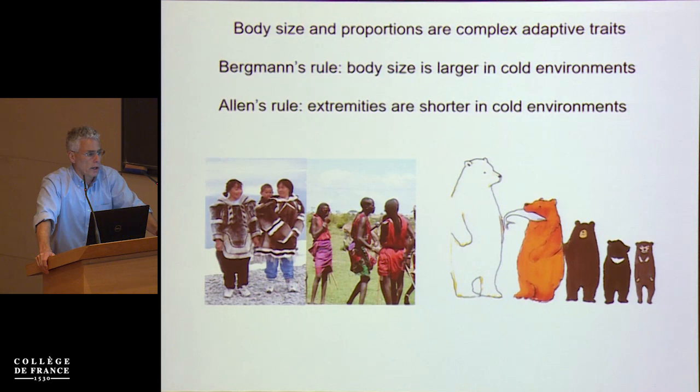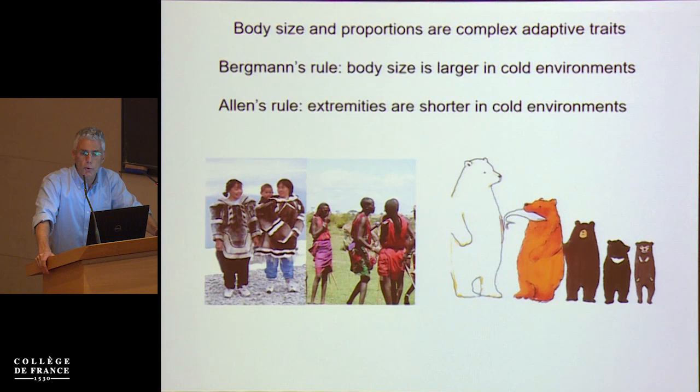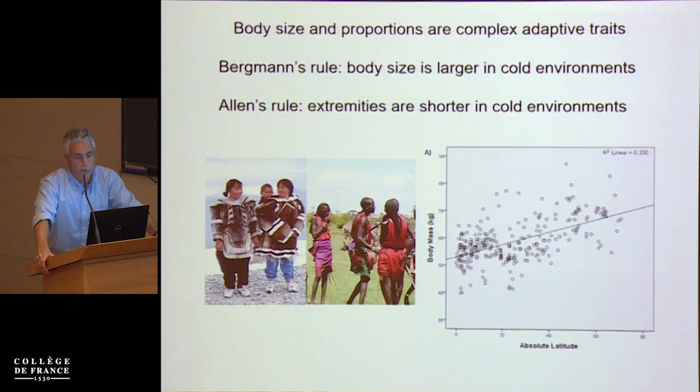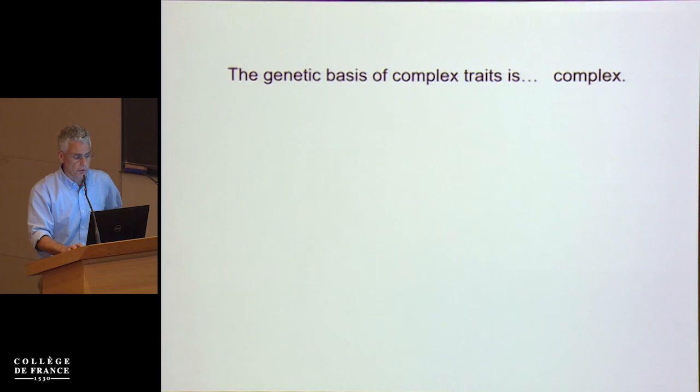Examples of these are things like body size and proportions. Bergmann's rule — the observation that body size increases as you go into colder environments — and Allen's rule, that extremities get smaller in colder environments. Both of these patterns are seen in many mammals. They're probably two of the best described eco-geographic patterns in mammals, and they apply in humans as well. These are data from indigenous humans from a variety of latitudes showing an increase in body mass with latitude.